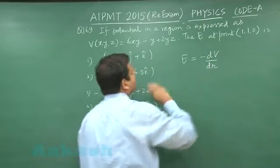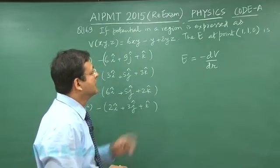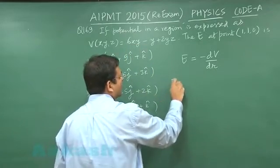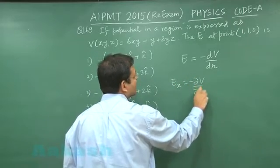But here you have been given potential in xyz coordinate system. So electric field x component will be minus del V by del x, partial derivative you have to take.